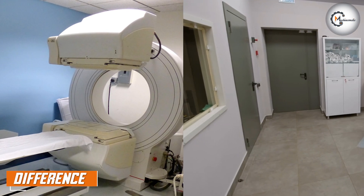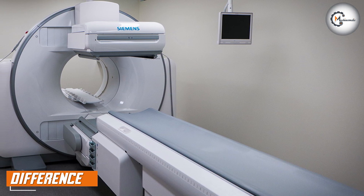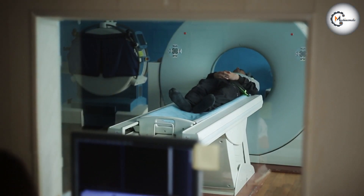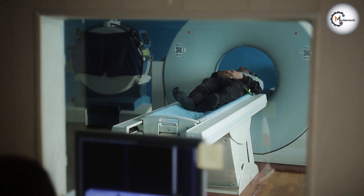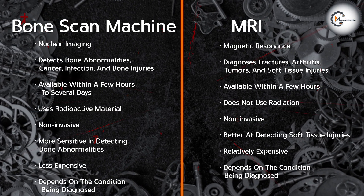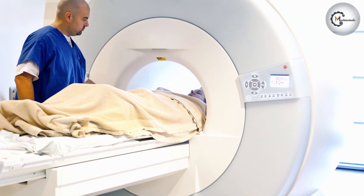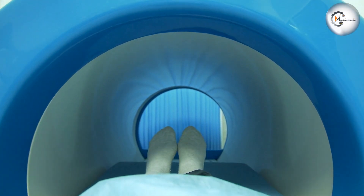Bone scan machine and MRI are different in many ways. Bone scan machine is a nuclear imaging test that uses radioactive material to produce images of the bones, while MRI uses a powerful magnetic field and radio waves. Another significant difference is the time it takes to get results — bone scan machine results usually take a few hours to several days, while MRI results are available within a few hours. Bone scan machine is also more sensitive in detecting bone abnormalities, while MRI is better at detecting soft tissue injuries.